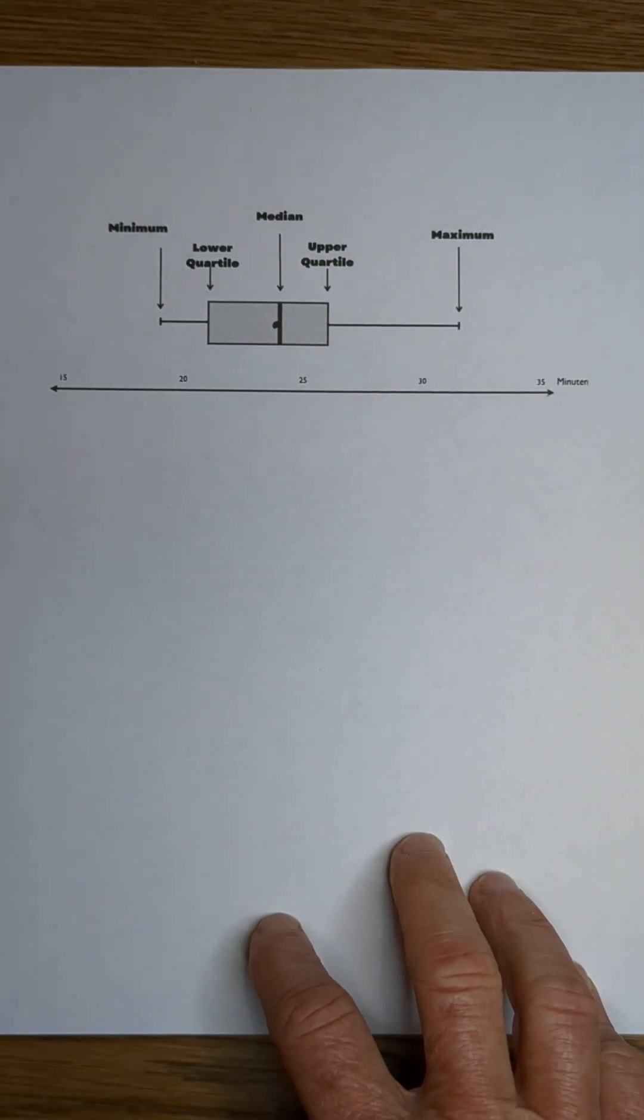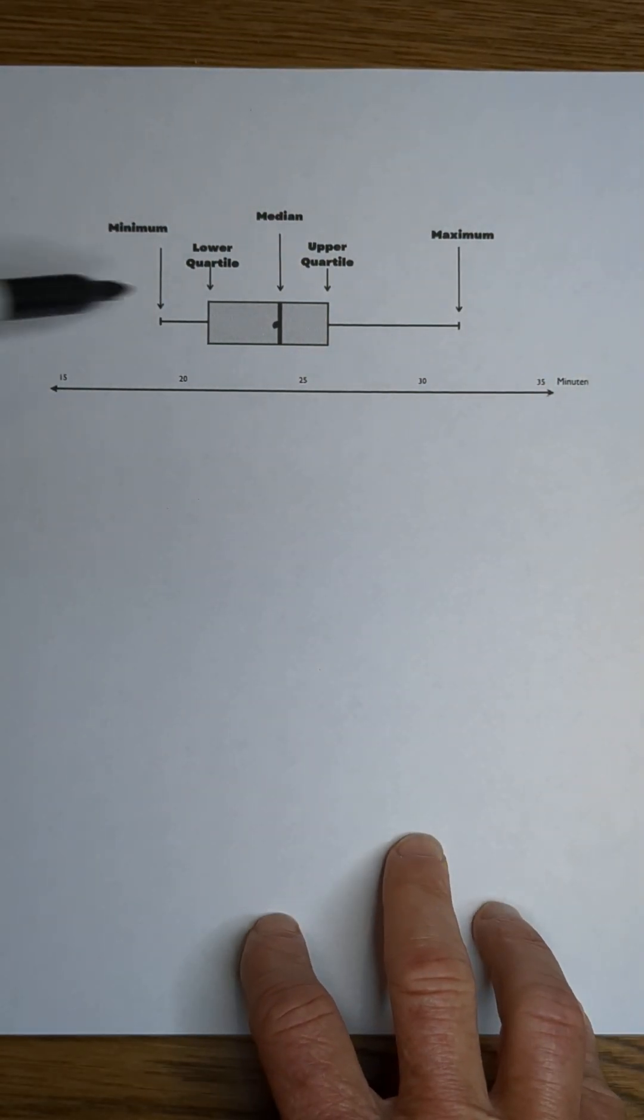Let's figure out how to read a box and whisker plot. Here is the box. These are the whiskers.